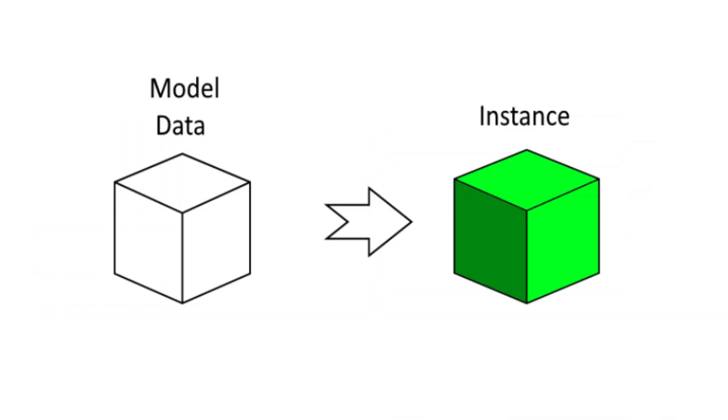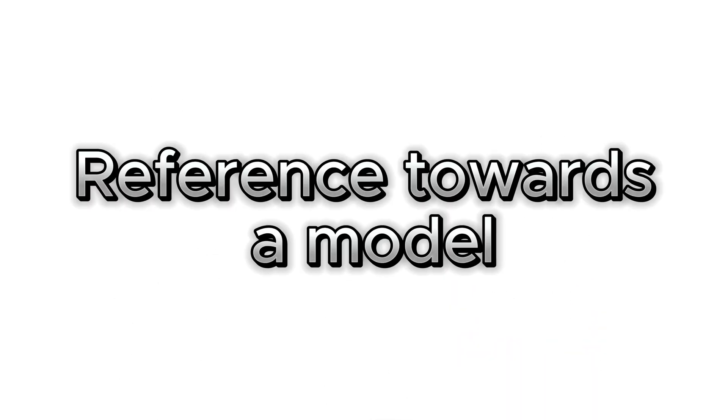Lastly, we need something called a model instance. A model instance is a reference to a model. It is a better way to render instead of creating model objects over and over again.